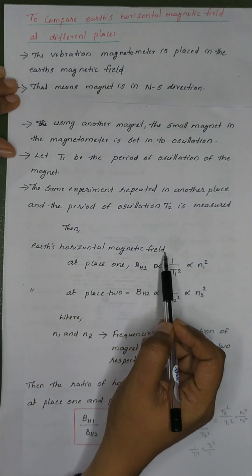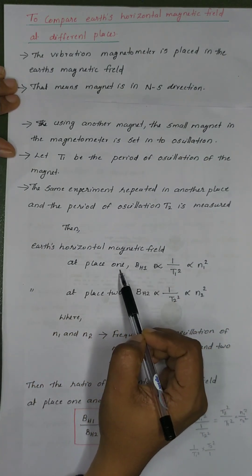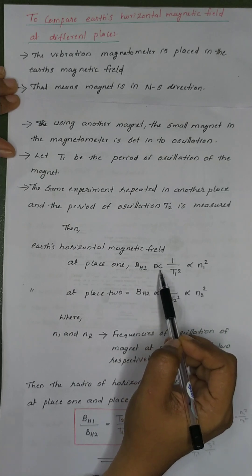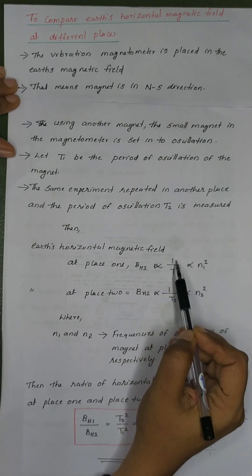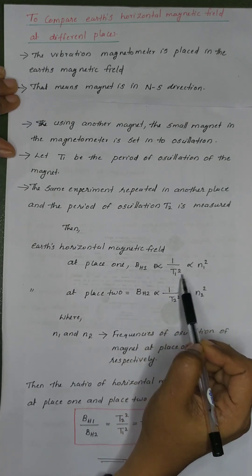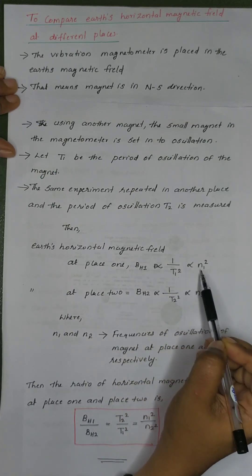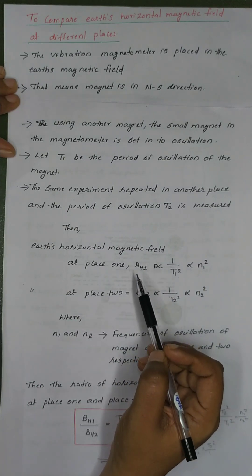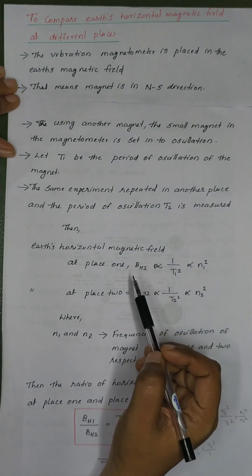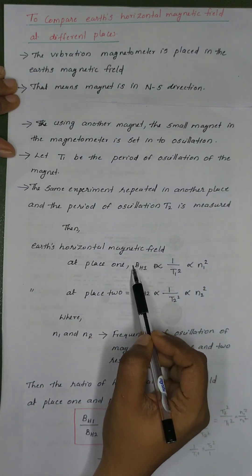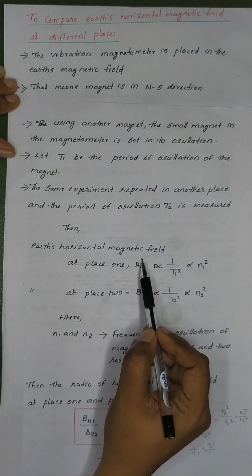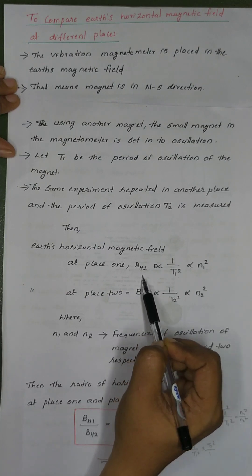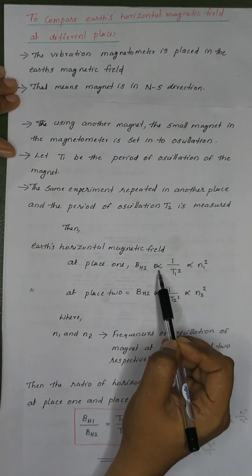The Earth's horizontal magnetic field at place 1, BH1, is proportional to 1 by T1 squared, which is proportional to N1 squared. Here N1 represents the number of oscillations — that is, the frequency of oscillation — at place 1.